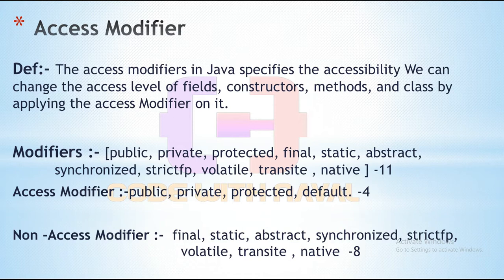The access modifier in Java specifies the accessibility. We can change the access level of fields, constructors, methods, and classes by applying the access modifier. Or we can simply change accessibility using the access modifier.